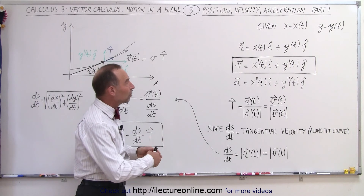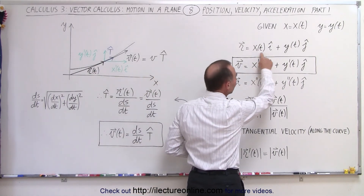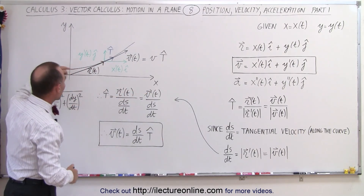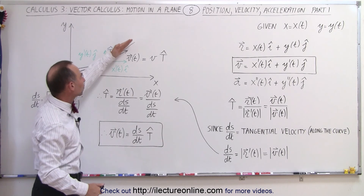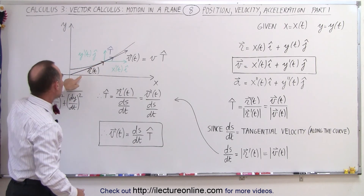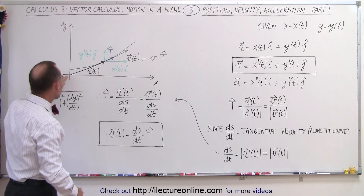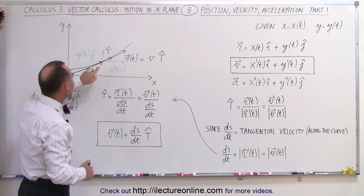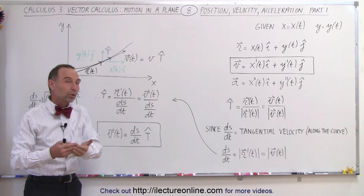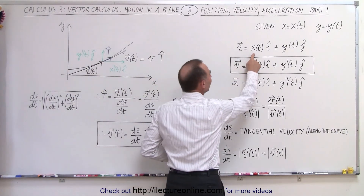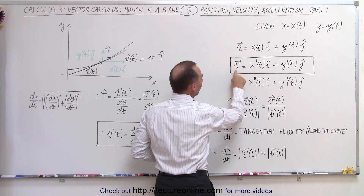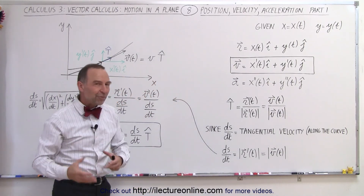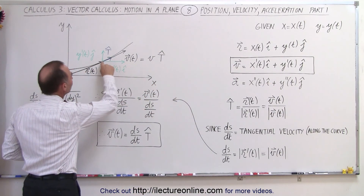The velocity vector can then be found by taking the derivative of both the x and the y component. Let's see what that looks like graphically. We have a curve and we're moving along it in a given direction. We pick a point on the curve and represent it by a position vector from the origin to that point. The velocity at that point is found by taking the derivative of the x and y components, giving us velocity equal to x-prime in the i direction plus y-prime in the j direction.